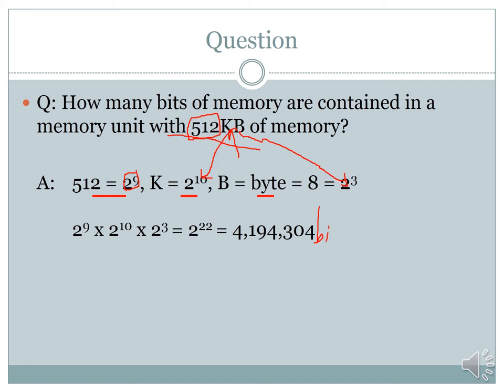Remember: a bit is one memory cell, a byte is made up of 8 bits, a kilo is 2 to the power 10 bits, a mega is 2 to the power 20, and so on. That is how our system operates in that context.